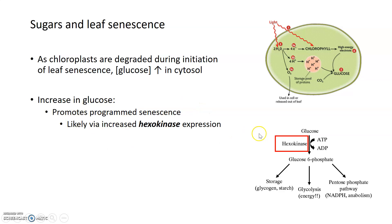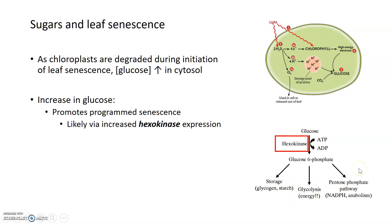There's an accompanying increase in expression of a particular enzyme called hexokinase, which converts glucose to glucose-6-phosphate so that it can either be stored or enter into glycolysis or other pathways.